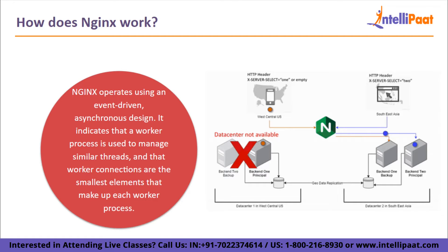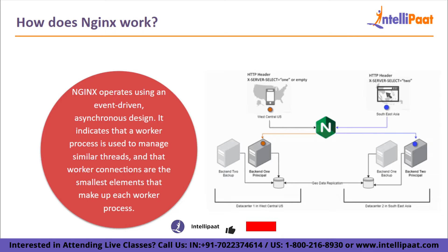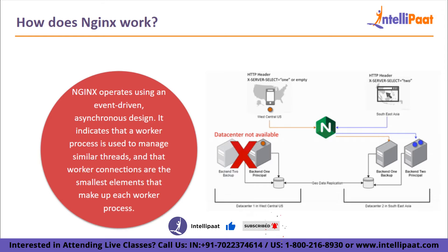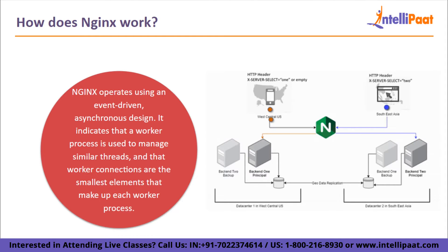Although it may seem straightforward, one worker connection can handle up to 1,024 requests that are comparable. Nginx is able to process thousands of requests without any issue as a result. It's also the reason Nginx became the fastest web server, which is great for high traffic websites like e-commerce, search engines, and cloud storage.